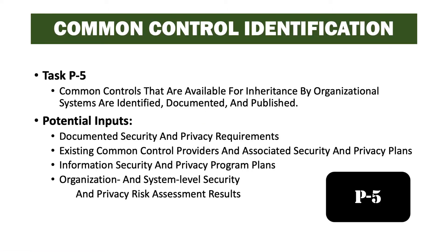Task P5 states common controls that are available for inheritance by organizational systems are identified, documented, and published as part of this task. Potential inputs include documented security and privacy requirements, existing common control providers and associated security and privacy plans, information security and privacy program plans, and organization and system level security and privacy assessment results.